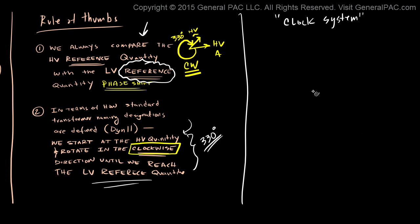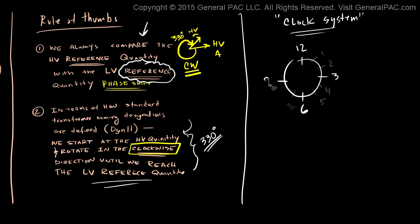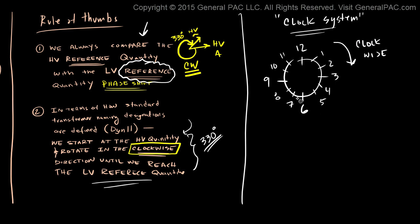To give you a quick peek of this clock system: you draw a clock, and then you have hours on the clock — 6, 7, 8, 9, and 11. The hour hand always moves in the clockwise direction. We're going to look at how we can define this phasor diagram with this clock system and make intuitive sense out of it.